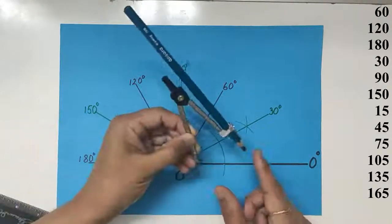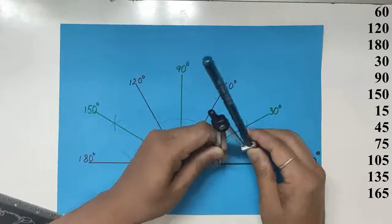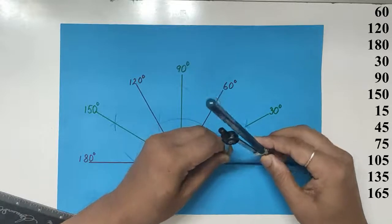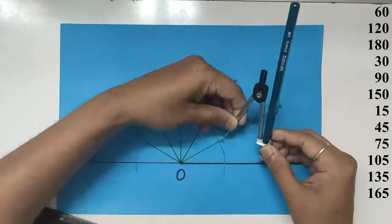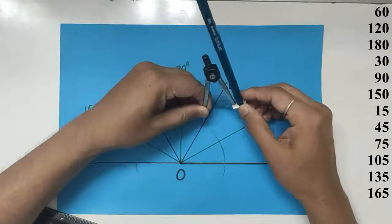To get 15, we bisect 30 degrees. We can change the radius at this stage, but don't change afterwards. One arc, the second arc, that's 30.